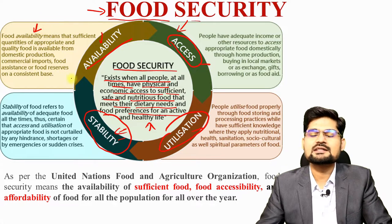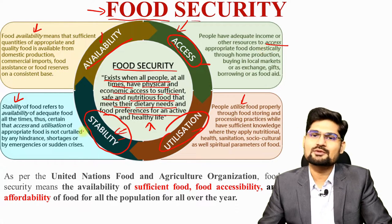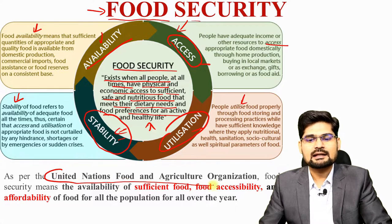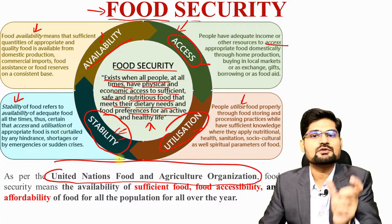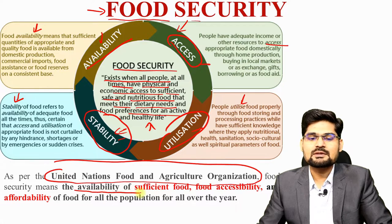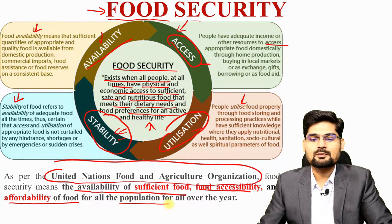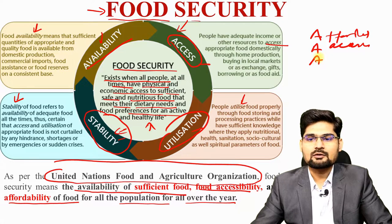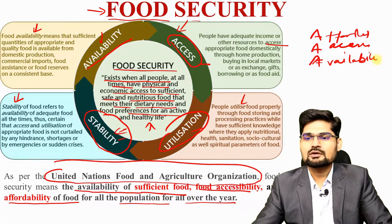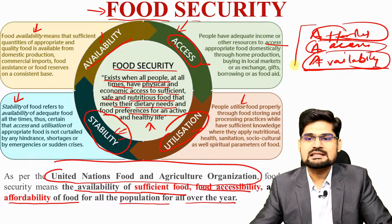Food availability is very important, as is stability, utility and accessibility. The United Nations Food and Agricultural Organization — FAO — has described food security as the availability of sufficient food, food accessibility and affordability of food for all population all over the year. So the concept of the three A's is key here: availability, accessibility and affordability of food.